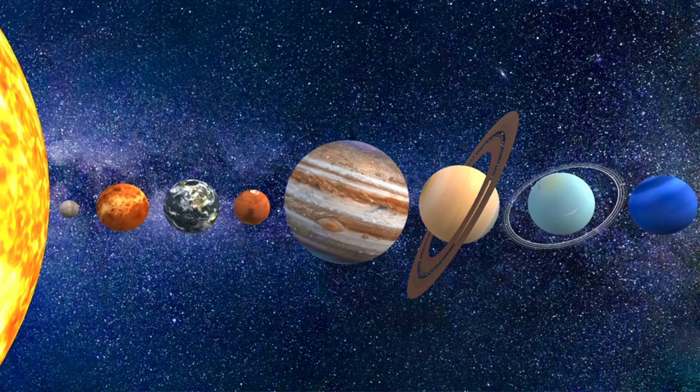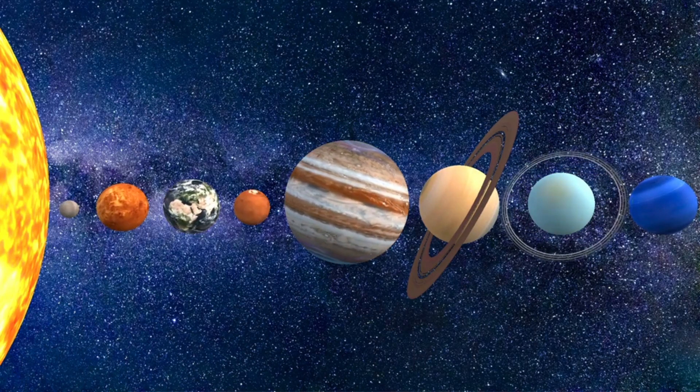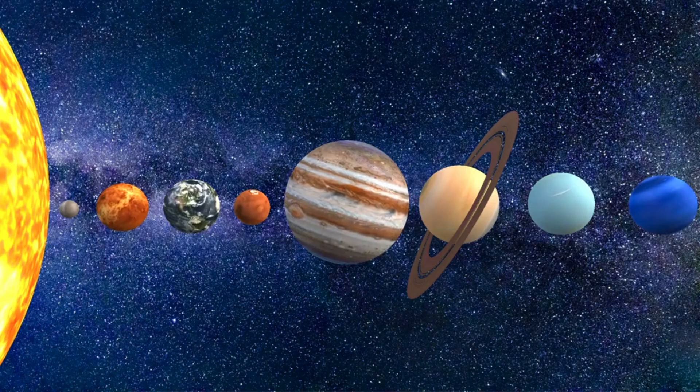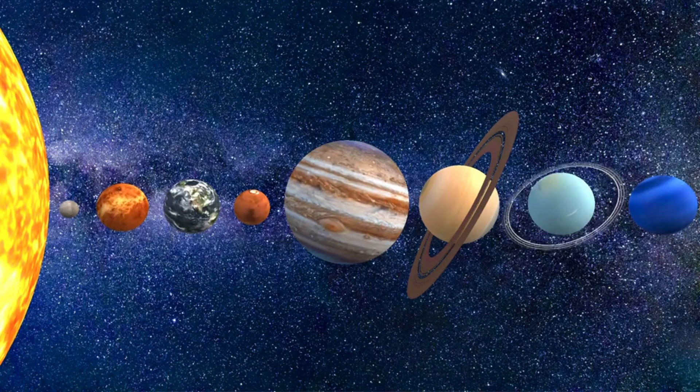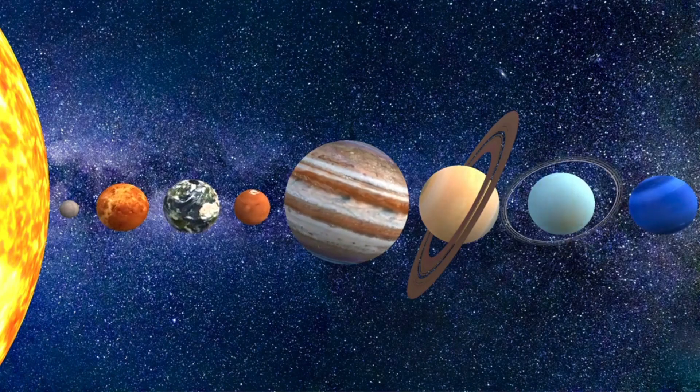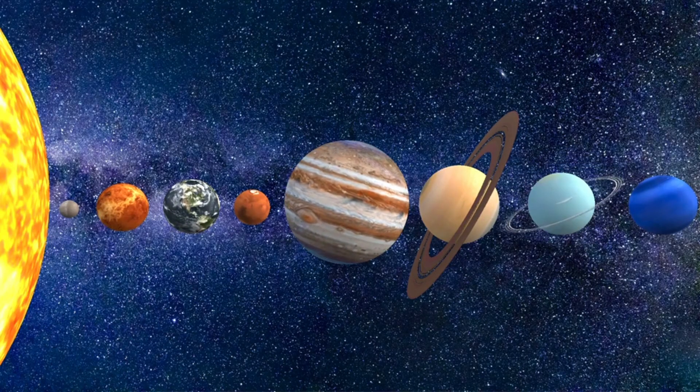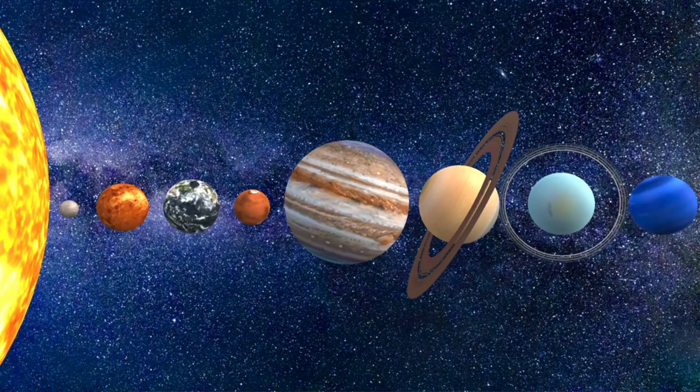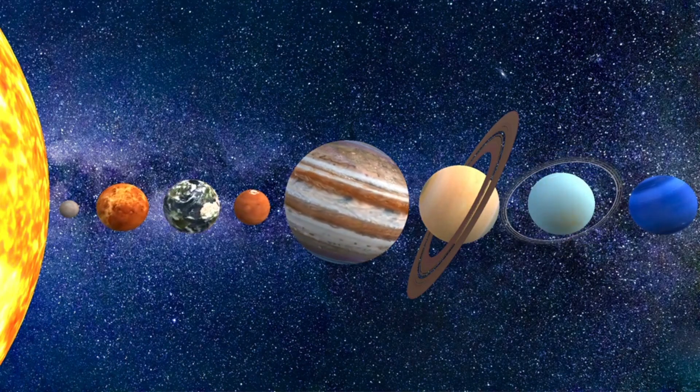And did you know Earth is one of eight planets in our solar system, and it's the third one from the Sun? If Earth were closer, it would be too hot, and if it were farther, it would be too cold. But we're just the right distance to keep the temperatures perfect for life.